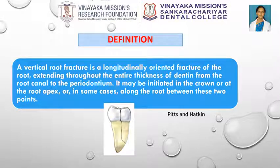A vertical root fracture is a longitudinally oriented fracture of the root extending throughout the entire thickness of dentin from the root canal to the periodontium. It may be initiated in the crown or at the root apex, or in some cases along the root between these two points.